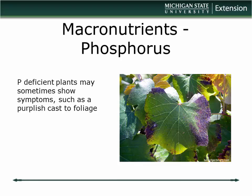If your soil test comes back showing lots of phosphorus but you have a sneaking suspicion that adding more might get a response, the thing to do is some trialing. The only way to judge a phosphorus response is often to trial, because you can't always tell from foliar levels alone. The challenge with nursery production is that people are growing dozens or hundreds of species and cultivars, each with a slightly different response — hydrangea versus weigela versus conifers, for example.